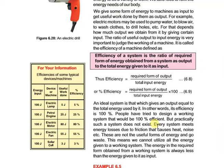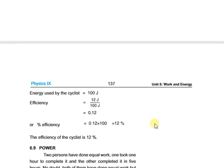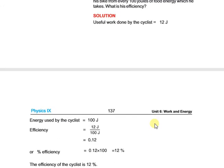That is today's topic. There is an example, DVS 6.5, which shows how to measure efficiency — you take the work done as input or output, divide, and multiply to get efficiency. Questions and answers will also be provided. Take care of yourself. Allah Hafiz.